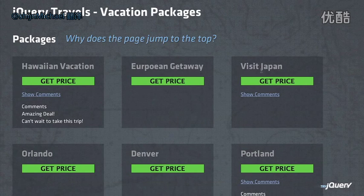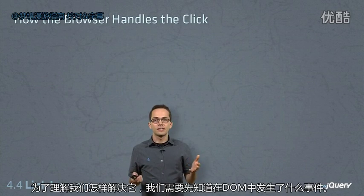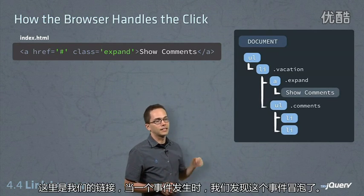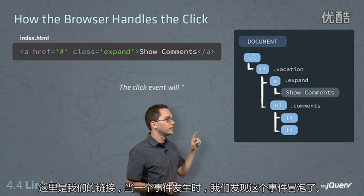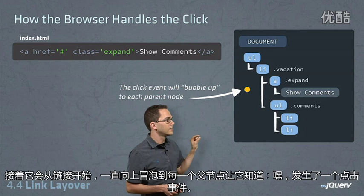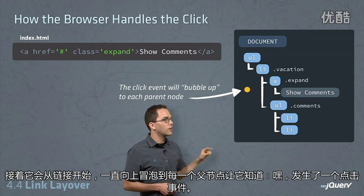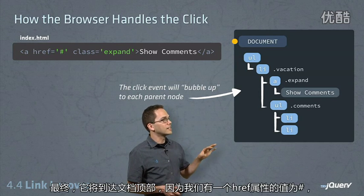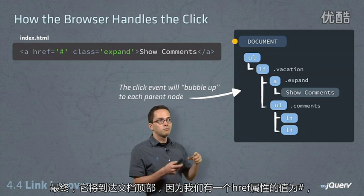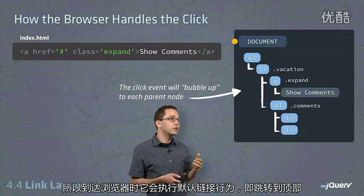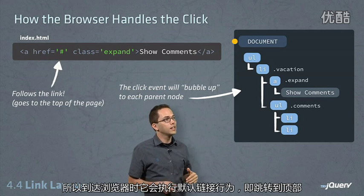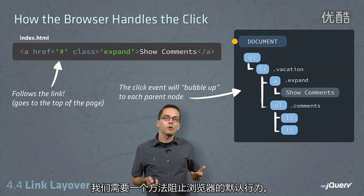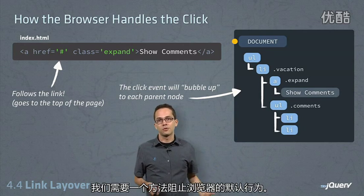In order to understand how we fix that, we need to grasp what's happening when an event occurs inside of the DOM. Here's our link, and when an event occurs, we get this event bubble. It's going to start right there on our link and then go up to each parent node to let it know a click event happened. Eventually it reaches the top, and because we have an href with a hash, it's going to follow that link when it gets up to the browser, which is the default behavior — popping it back up to the top of the page. So we need to find a way to prevent that default browser behavior.